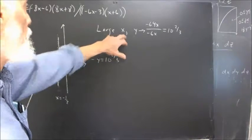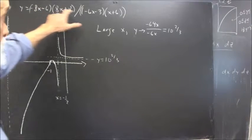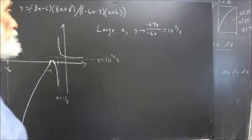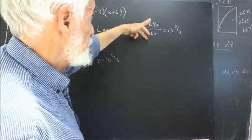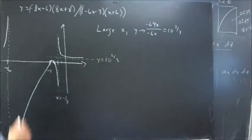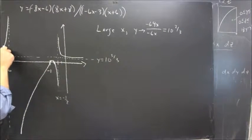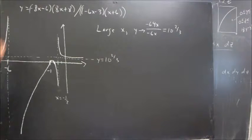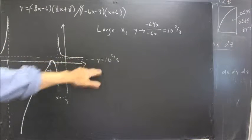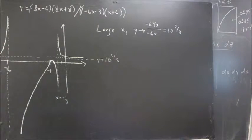The same is going to be true if x is a large negative number. If x is a large negative number, that's going to make this positive, this negative, this positive, and this negative. But we're still going to have essentially 64x over 6x, negative 64x over negative 6x, still giving us 10 and 2 thirds, so that that horizontal asymptote will extend over here. And running out of board space, but this will curve around asymptotic to the line y equals 10 and 2 thirds. Now I'm going to pause here and draw a slightly better graph.